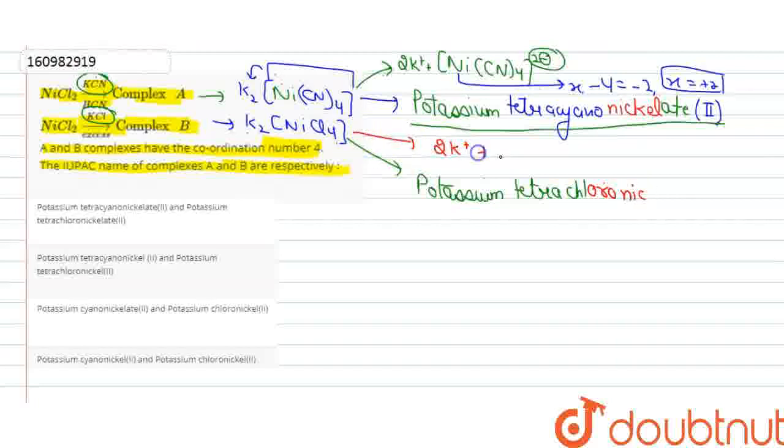2K plus, plus nickel Cl4 2 minus. This is the negative charge, so nickelate. Okay.